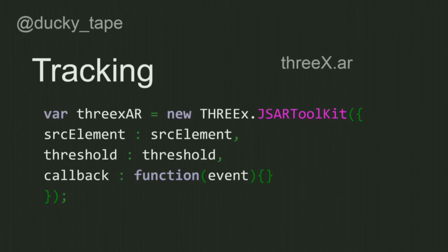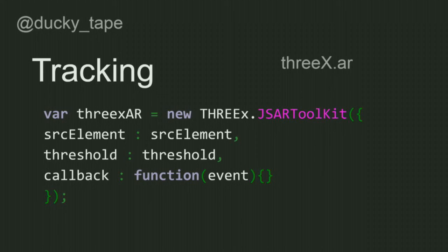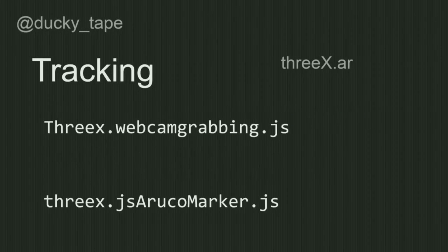Here's the three.xr.AR thing I was talking about earlier. You get the source element — your camera, video, or canvas — then you tell it the threshold of what you want to track, and then you get an event to tell it what to do when that happens. It also grabs your webcam for you, handles all the video grabbing, and gets all the positions in 3D if you want to put 3D objects over that.